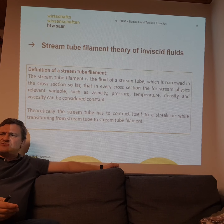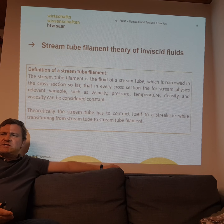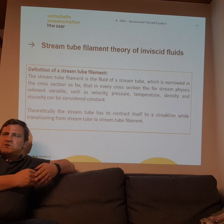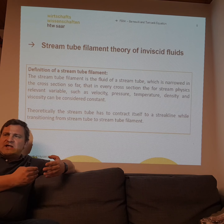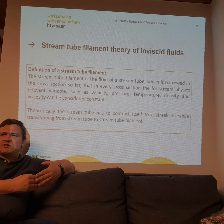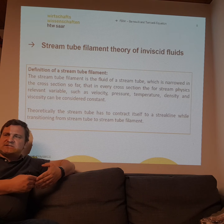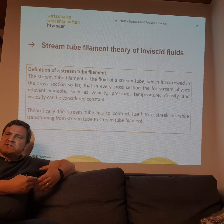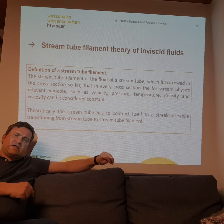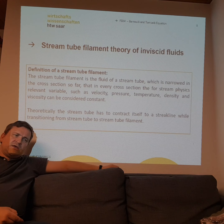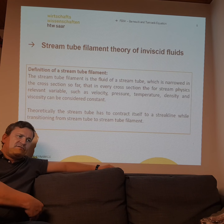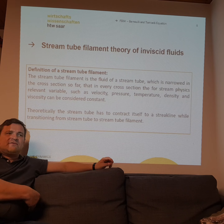The stream tube filament is a fluid of a stream tube which is narrowed in cross section so far that in every cross section the physically relevant variables — like pressures, temperatures, velocities, densities, and viscosities — are uniform. It should follow the streamline of the flow, but as you know from simulations, in many cases it will not follow, and if you have turbulent effects the stream tube filament theory will not fit very well.